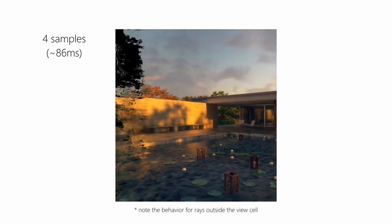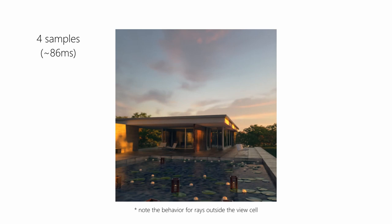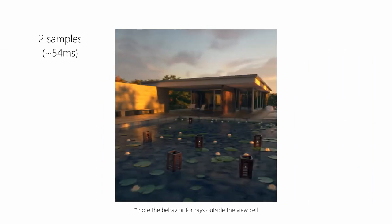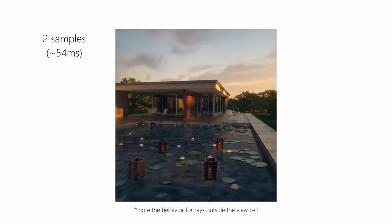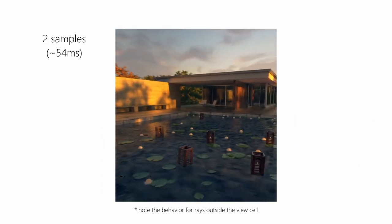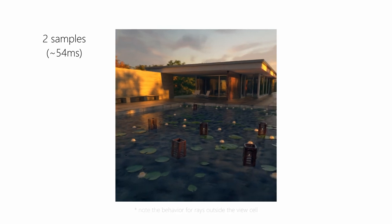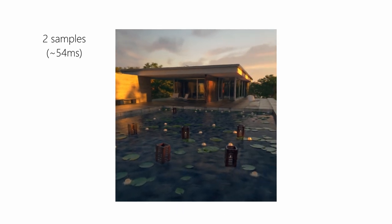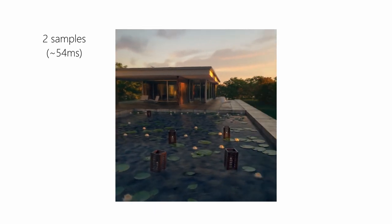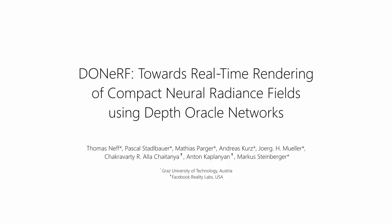To conclude, DoNerf is the first fully neural representation capable of rendering in real time without requiring baking or caching. We are confident that such a local sampling strategy will be essential for real-time neural rendering going forward.